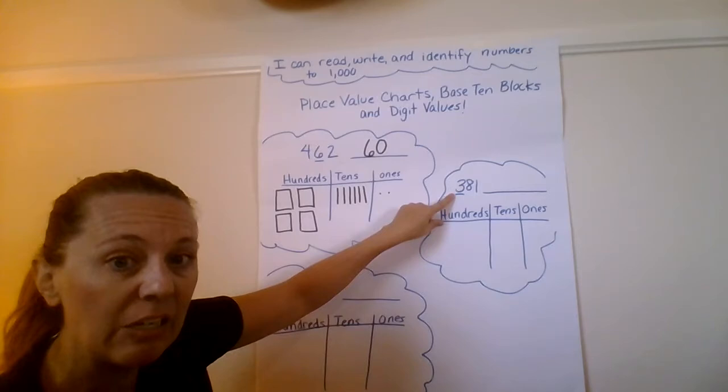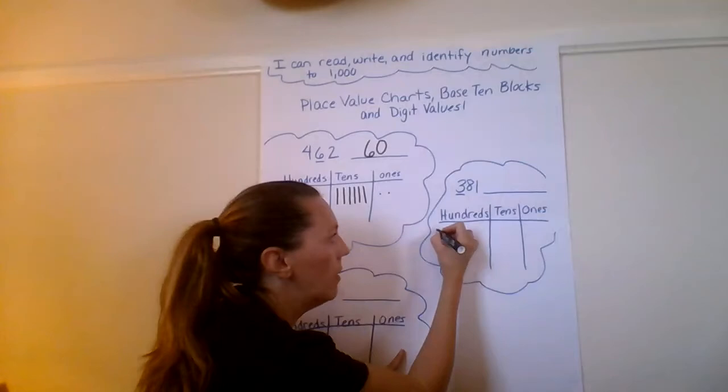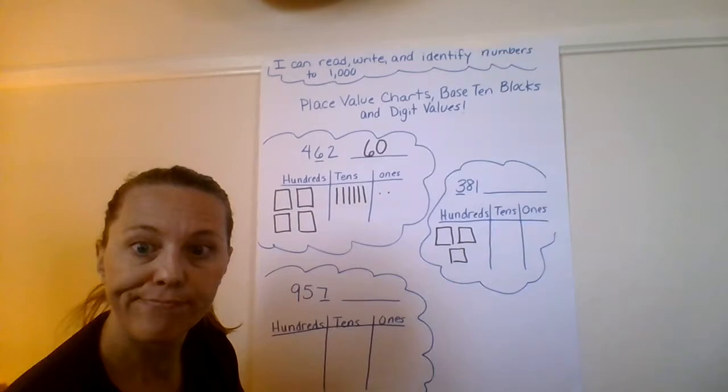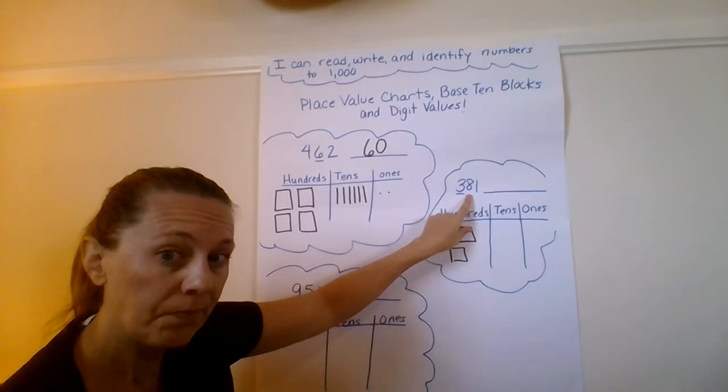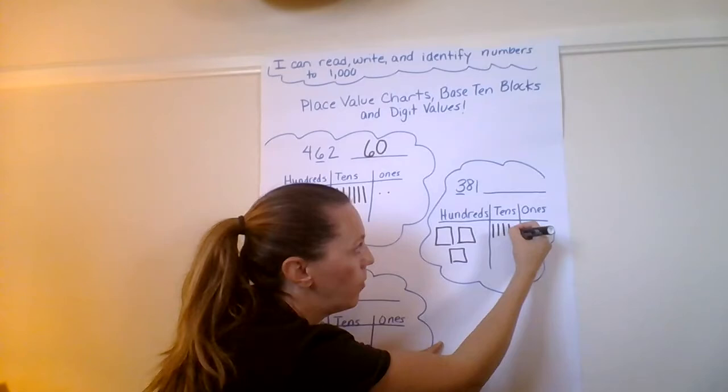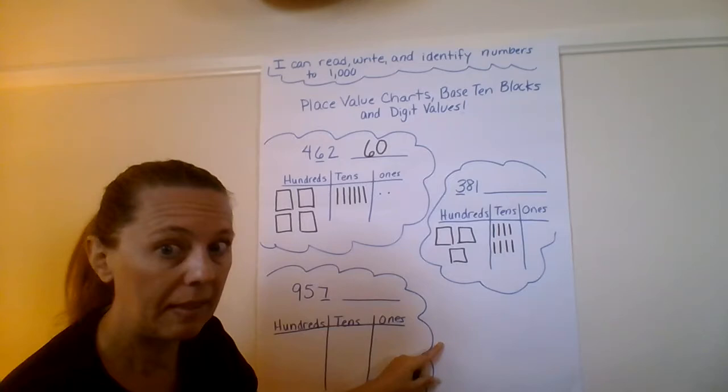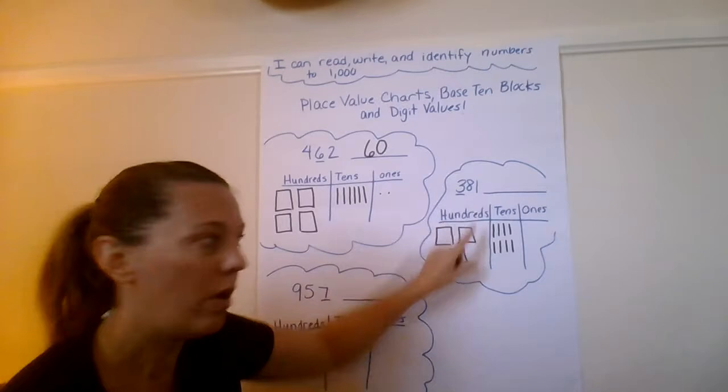So how many hundreds flats do I have in this number? Right. Three. Here we go. One, two, three. Done. How many tens rods do I need to draw? Right. Eight of them. One, two, three, four, five, six, seven, eight. Easy peasy, lemon squeezy.